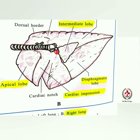The right lung has four lobes: apical, cardiac, diaphragmatic, and accessory or intermediate. If asked about the left lung, it has three lobes.